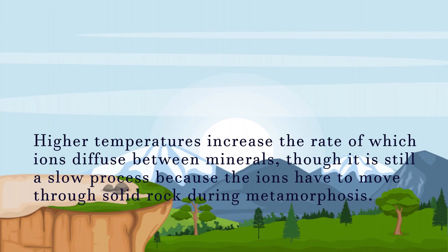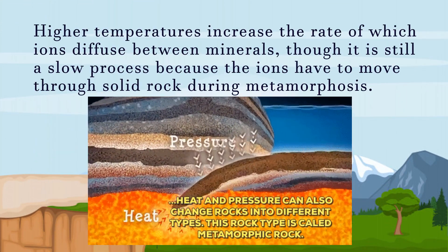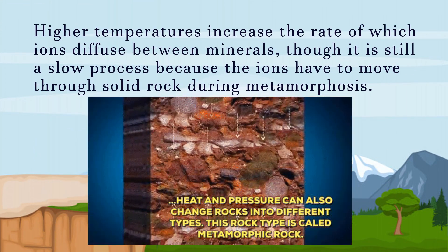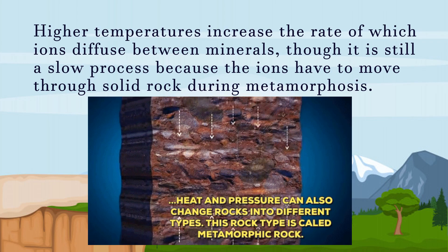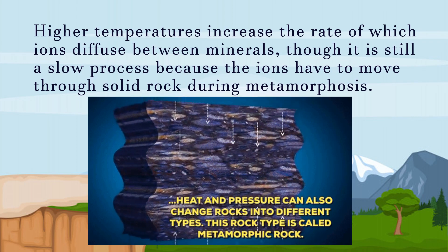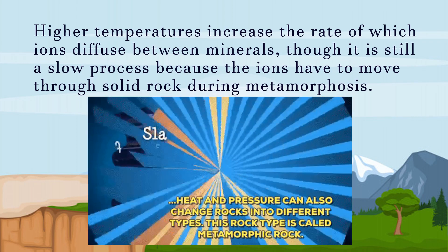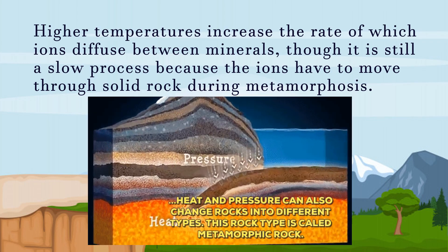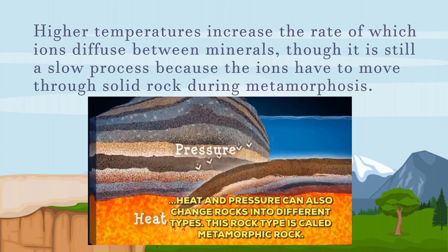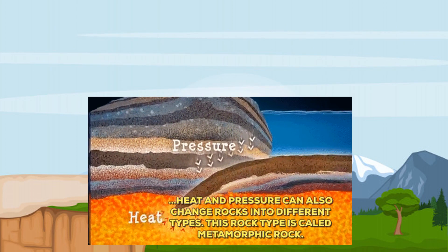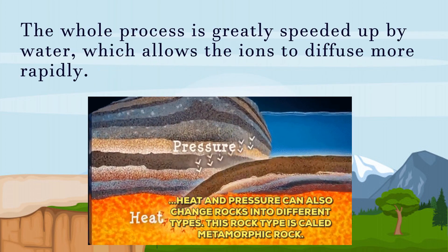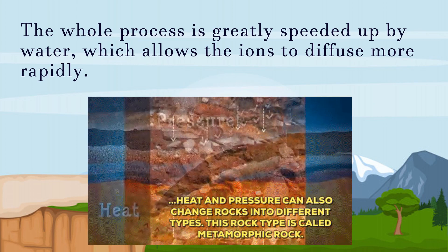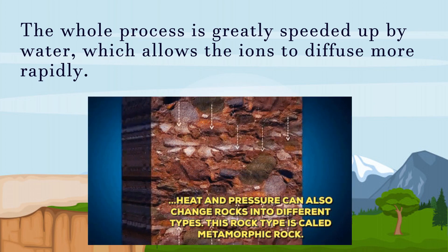Higher temperatures increase the rate at which ions diffuse between minerals, though it is still a slow process because the ions have to move through solid rock during metamorphosis. The whole process is greatly speeded up by water, which allows the ions to diffuse more rapidly.